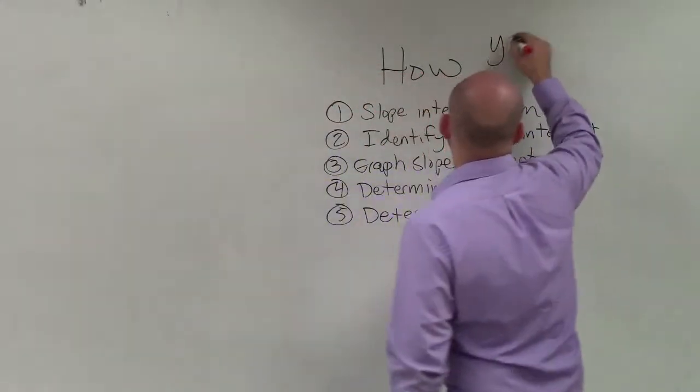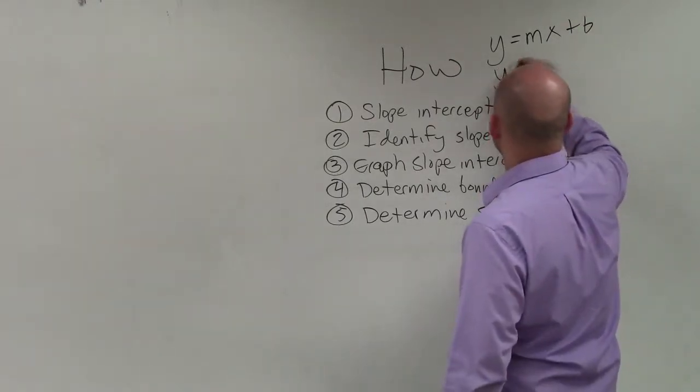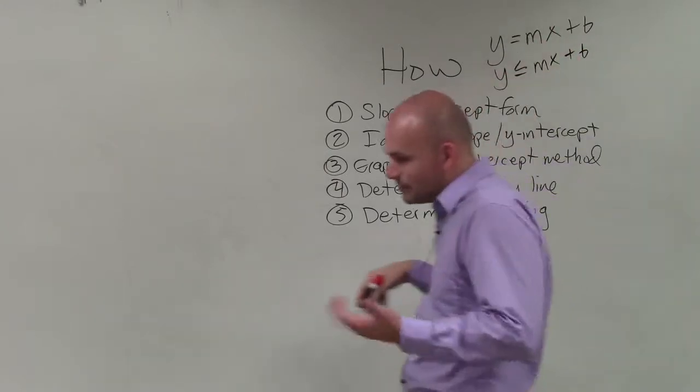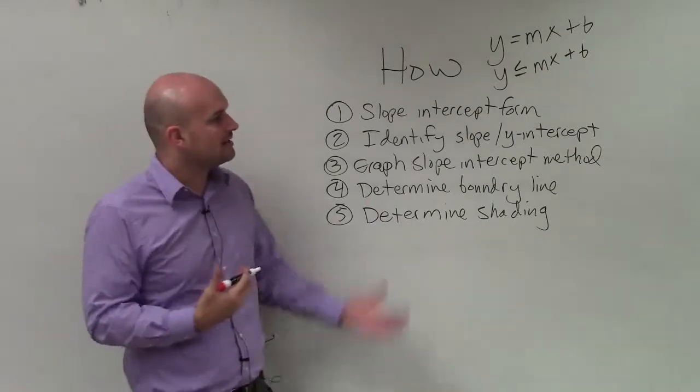Therefore, we have the linear equation in y equals mx plus b slope-intercept form. A linear inequality is really going to be the exact same thing, except instead of having an equation, we're going to have an inequality. And that's going to affect our solutions, which we'll talk about later.